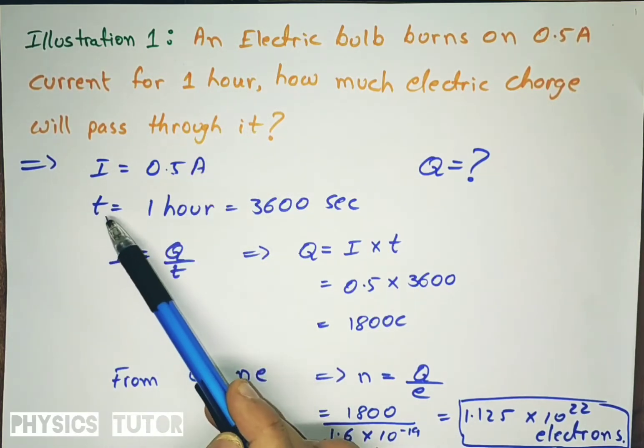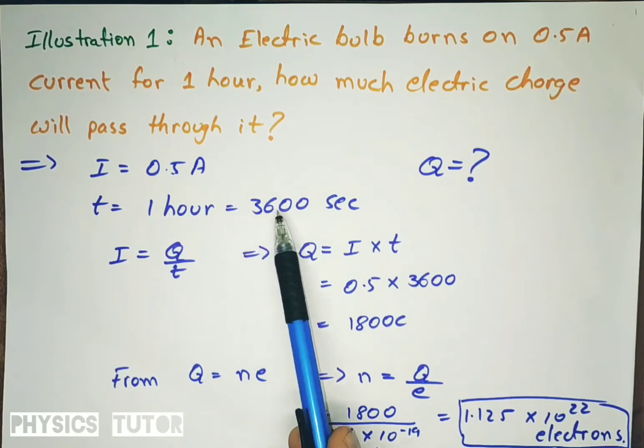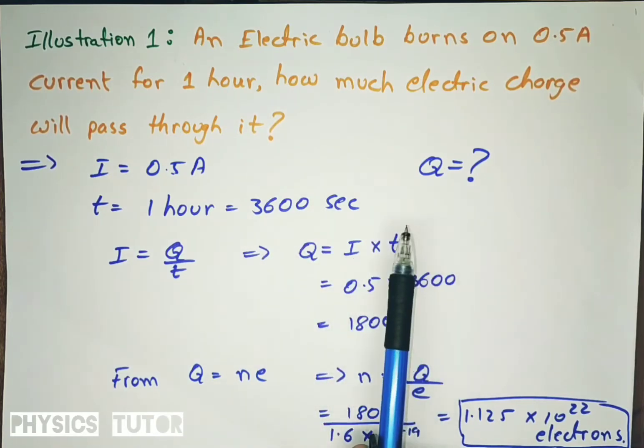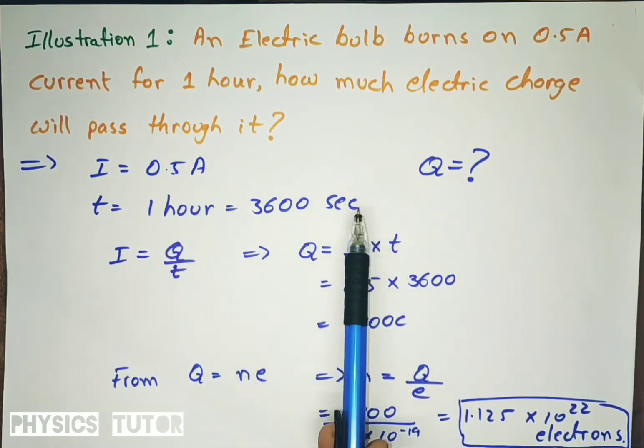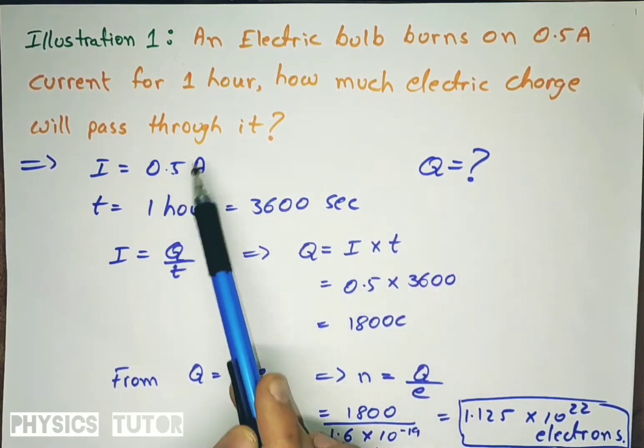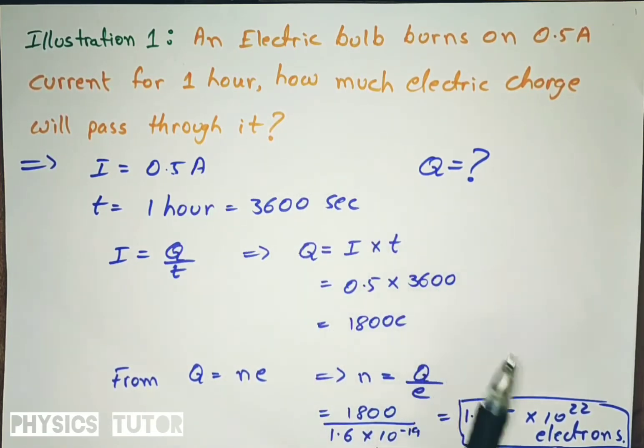So we need to convert this into seconds. If it is given in minute or hour doesn't matter, we will have to convert it into seconds because the formula for current I is equal to Q by t. Q is the charge in coulomb and t is the time we take in seconds, so t is equal to 3600 seconds.